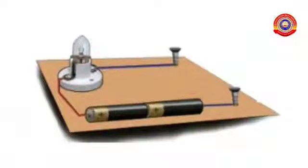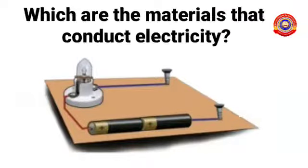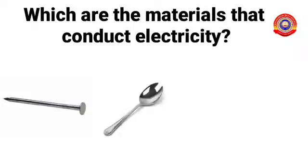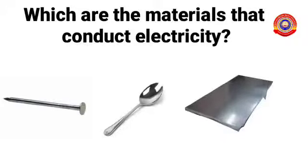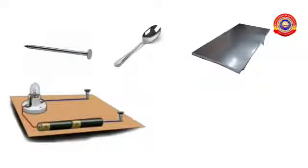This is the arrangement of a circuit. You are given many materials. Using these materials, we are going to complete the circuit. That means in between these two nails, you are going to use these materials and try to find out which are the materials that help to conduct electricity. Among these materials, nail, steel spoon, and tin sheet can conduct electric current. Thus, when they use these materials in this circuit, they make the circuit closed and thus the bulb glows.